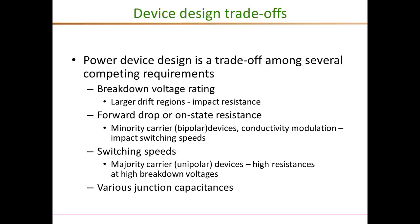Minority carriers can be removed by reverse current in the gate circuit or by electron-hole recombination. This makes switching speeds significantly slower and, in the case of diodes, makes the reverse recovery process longer. Unipolar or majority carrier devices offer very fast switching speeds because there are no minority carriers to be removed. However, unipolar devices at high breakdown voltages feature very large resistance because of the larger drift region needed. Junction capacitance also depends on the particular design and material, and can have a big impact on switching speed as well as the energy loss corresponding to stored junction capacitance energy.